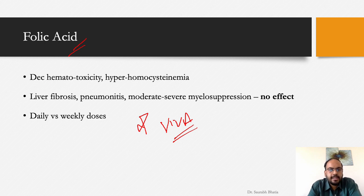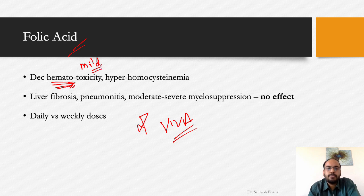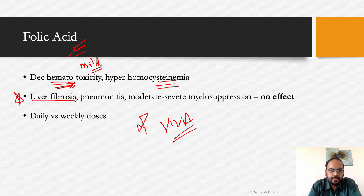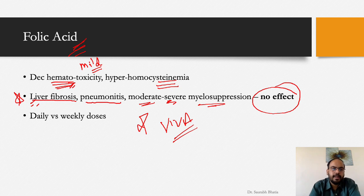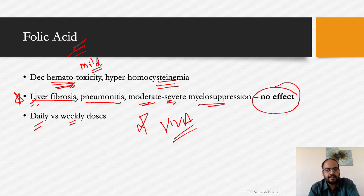Folic acid decreases blood toxicity, myelosuppression, and increased homocysteine from methotrexate. However, for liver fibrosis, pneumonitis, and moderate-to-severe myelosuppression, folic acid has little to no effect — meaning these complications require additional management beyond folic acid alone. Weekly folic acid dosing has similar efficacy to daily dosing and reduces pill burden and cost for the patient, improving compliance.